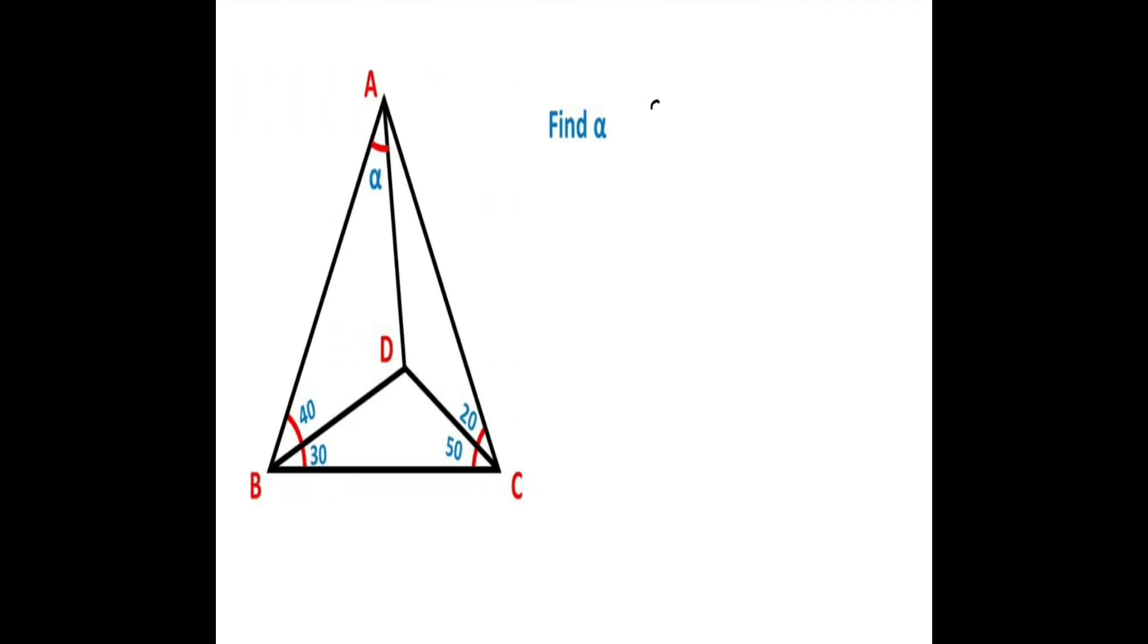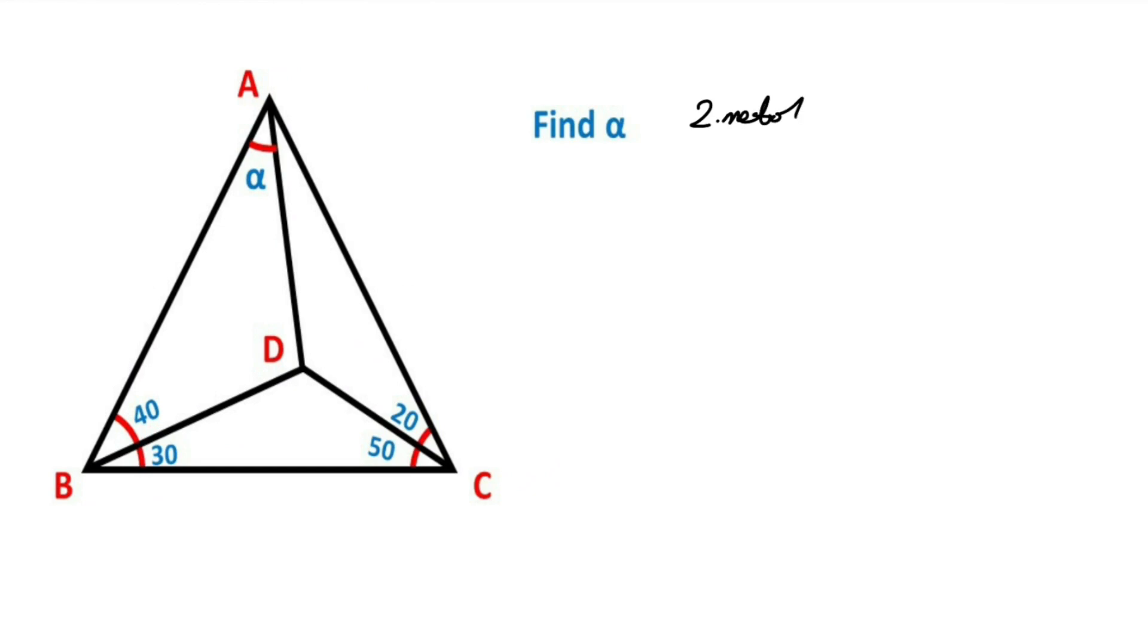Okay, this was the first method. Now we will calculate the value of alpha using second method. We know that here apex equals 40 degrees. That means angle DAC equals 40 minus alpha, right.